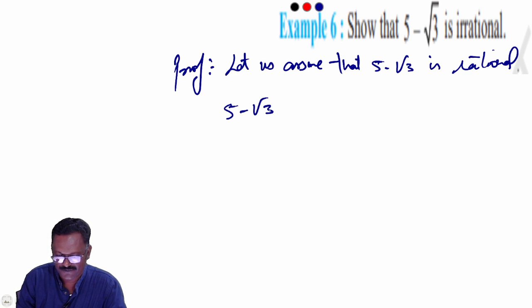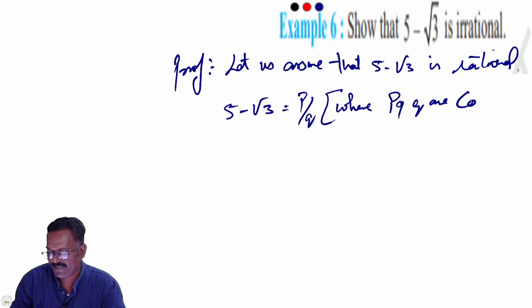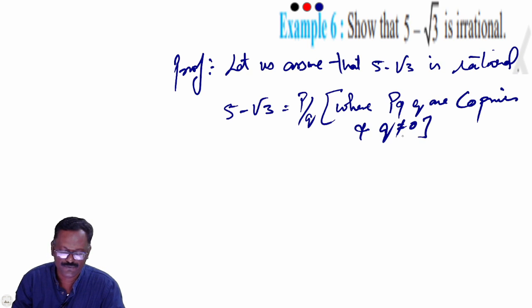5 minus root 3 is equal to P by Q, where P and Q are co-primes and Q is not equal to 0.